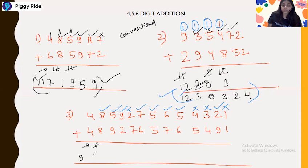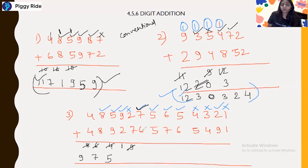So this will become 7. Next, 9 plus 5 is 14, and 4 is also increased by 1 because we have the carry number next, so this will become 5. Then 9 plus 2 is 11. The 1 will not be increased here because we do not have the carry number next, but we have the carry number after next. So 7 plus 2 is 9, but this 9 will be increased by 1 because we have the carry number next, so this will become 0, and when this carry goes, this 1 is also increased by 1, becoming 2.